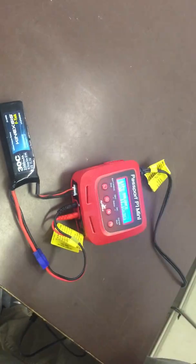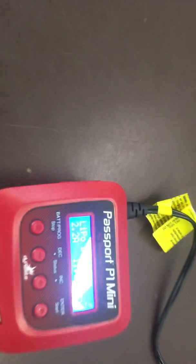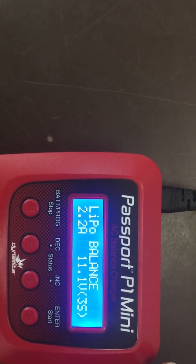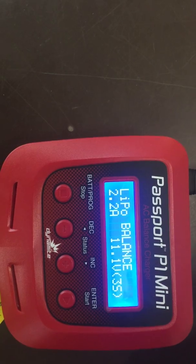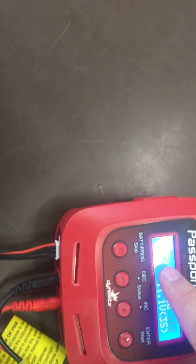Okay, now your battery is correctly plugged in. This is the screen that came up when I turned it on, and this is the screen that you want. It's already set for 2.2 amps.